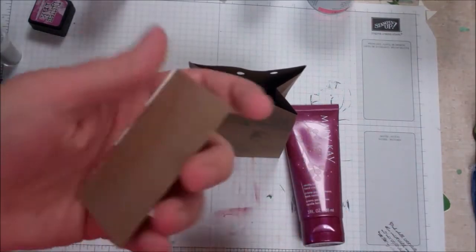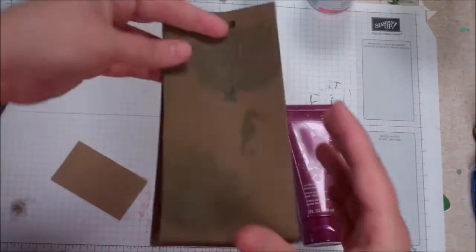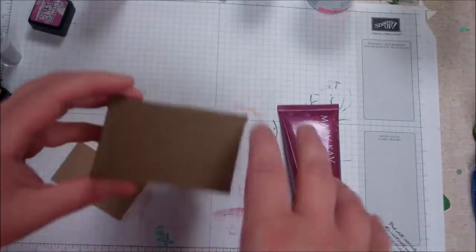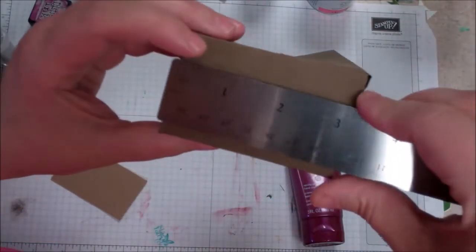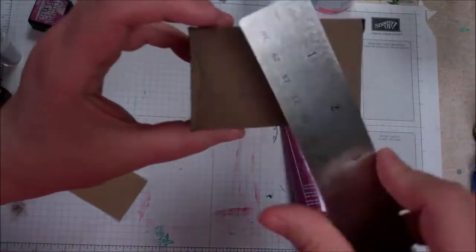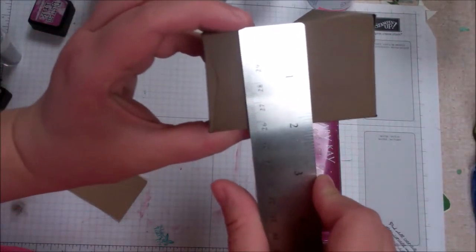You can go ahead and grab some chipboard and measure the bottom of your box. In this case, we have about three inches by one and three quarters, I'll say.